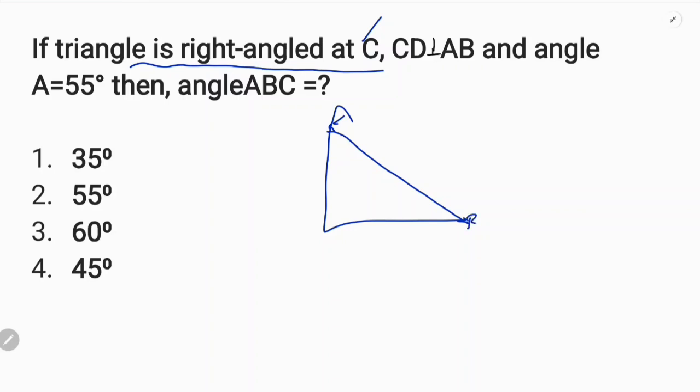Triangle ABC, right angle. CD is perpendicular to AB. D is 90 degrees.